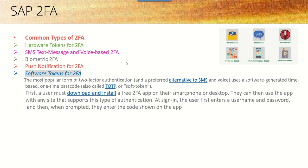The software token 2FA is very popular and the preferred method among all remaining types. It is called the software-generated time-based one-time passcode, that is TOTP. First, we need to install a free 2FA app on our smartphone or desktop — for example, we can use the Google Authenticator — and then use the app with any site that supports this type of authentication. At sign-in, the user first enters their username and password, and when prompted, enters the code shown on the app.